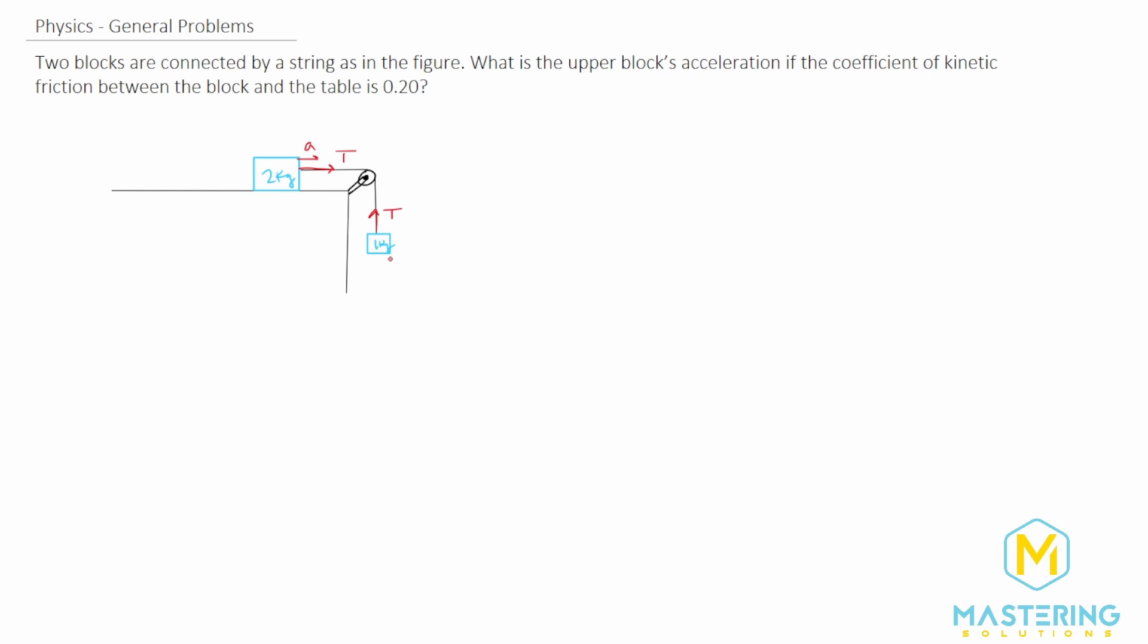Now we have tension in the string going up for the block down here and then we also have weight coming down. Up here we have weight and then the normal and then going backwards we have the kinetic friction. All right so that should be all of our forces. We're going to call this one block one and we're going to call this one block two just so that the masses match.